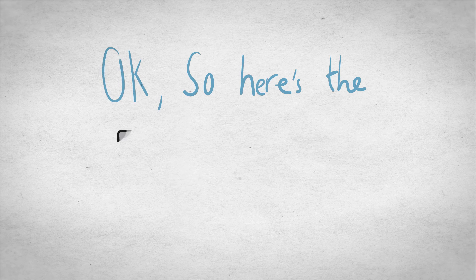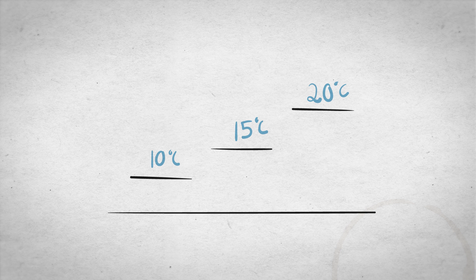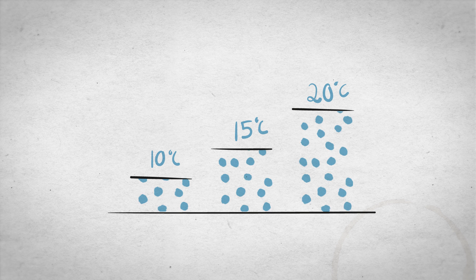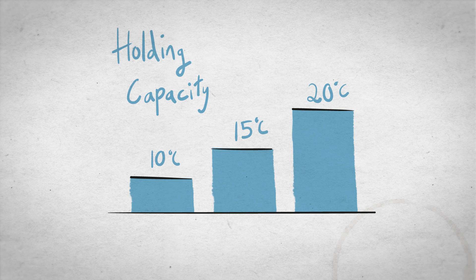OK, so here's the technical bit. At different temperatures, air can hold different amounts of water vapour. The warmer the air is, the more moisture it can hold, known as its holding capacity. But when there is more water vapour than can be held by the air, it becomes full up and condenses into liquid water.